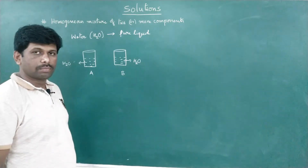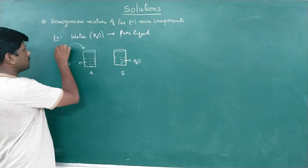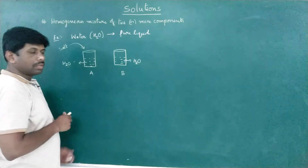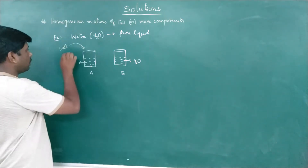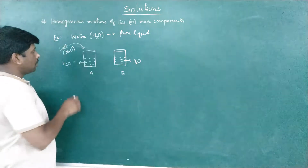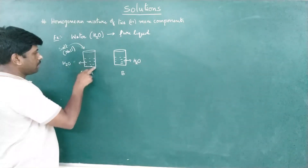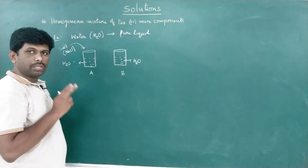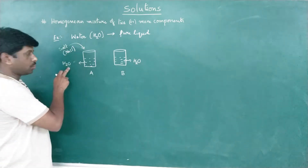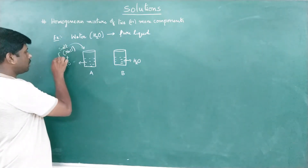Now let us try to add some salt to this water. We know the salt molecular formula is NaCl. After the addition of NaCl to H₂O, this beaker will now have two chemical components: NaCl and H₂O. When NaCl is added to H₂O, we simply call it a mixture.